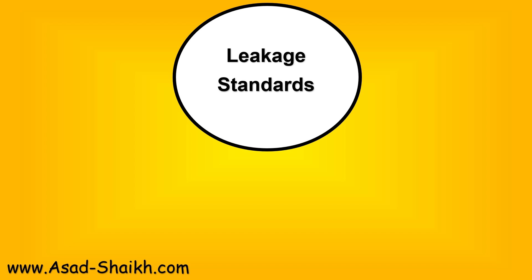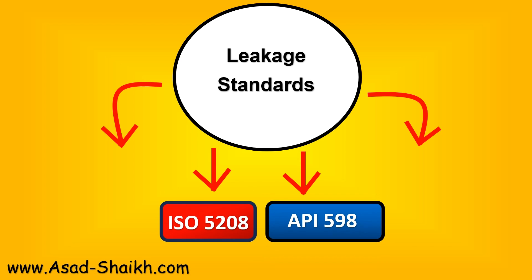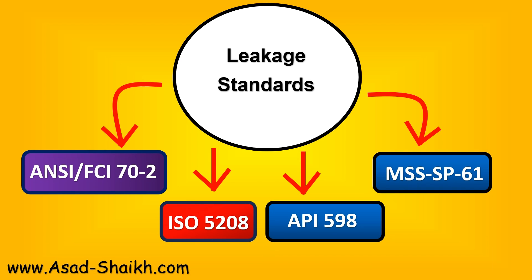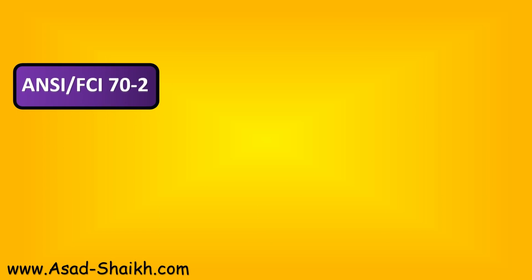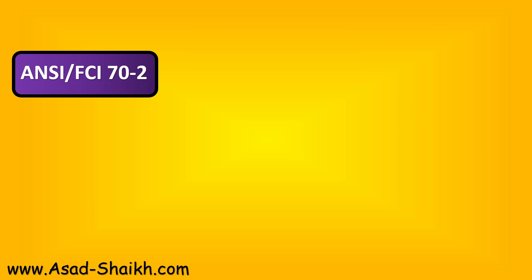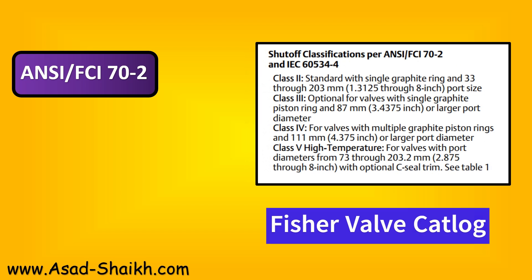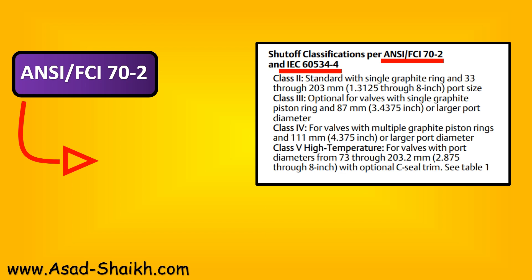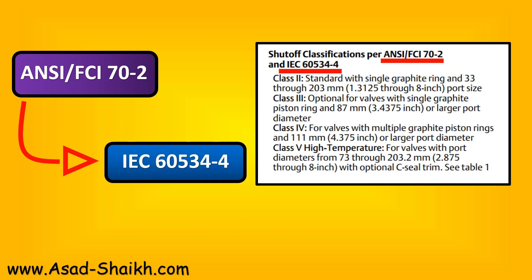What are the leakage standards actually available? There are a ton of leakage standards available — for example, the ISO standard, API standard, MSS standard, and the ANSI standard. For control valves throughout the world, the most used standard has been the ANSI FCI 70-2. When you look at many catalogs, you would also see the IEC standard — for example, IEC 60534-4, as shown in the Fisher catalog. These two standards are very similar to each other.